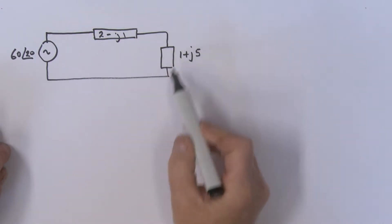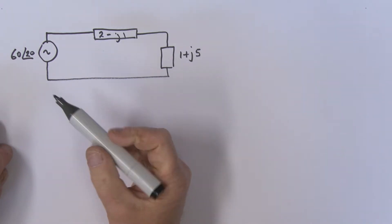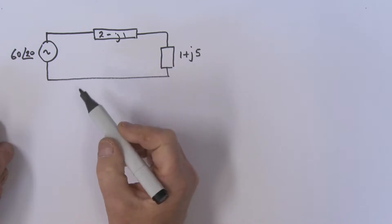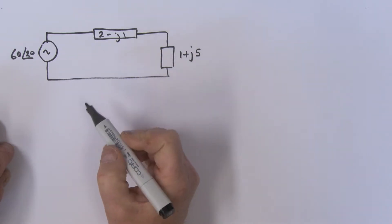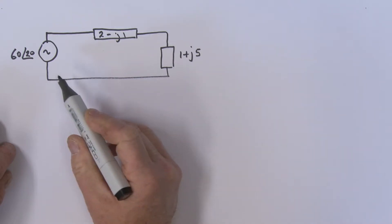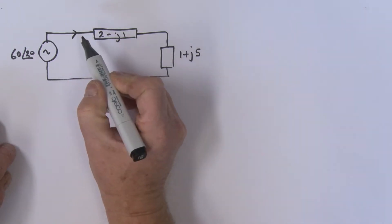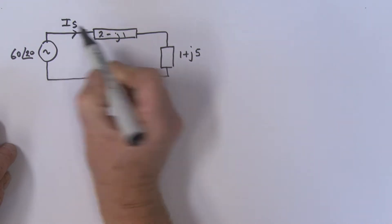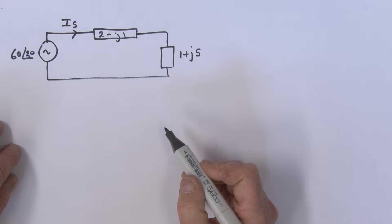Let's have a look at this example. What we're going to try to find is the apparent power, the reactive power, and the real power. I'm going to call this current I_s.